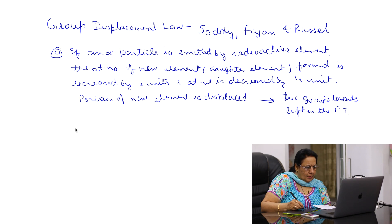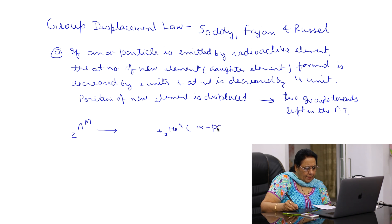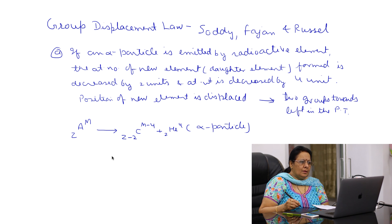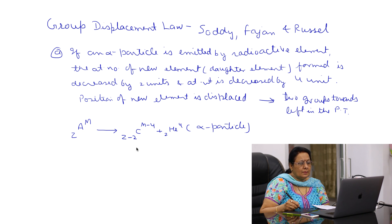Suppose element A has atomic number Z and atomic weight M. If an alpha particle (2He4) is emitted, then the atomic number is decreased by 2 and atomic weight is decreased by 4. The new element, suppose C, is formed. If A is present in the 5th group of the periodic table, then C must be in the 3rd group.